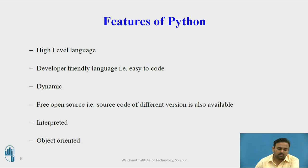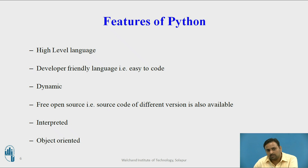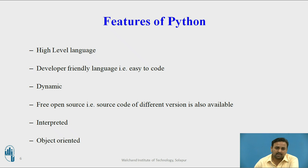Let's focus on the features of Python. First, it is a high-level language — the application developer is dealing with it at the high end, that's why it is called a high-level language. It is developer-friendly because it is very easy to code in Python. A lot of syntaxes and things that unnecessarily burden programmers are removed in Python.